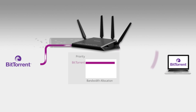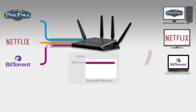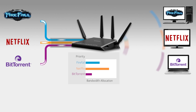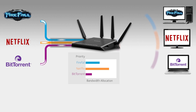As before, when the laptop begins the BitTorrent download, the router allocates the available bandwidth for it. But now, when the Netflix video and the online game begin, the X4 adjusts the bandwidth allocation, giving less bandwidth and lower priority to the BitTorrent download.